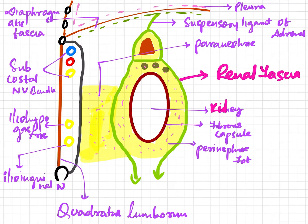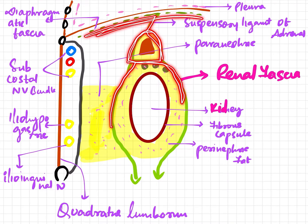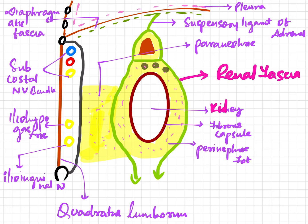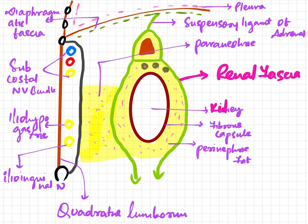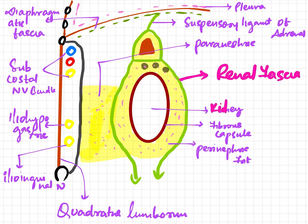This renal fascia extends in different directions — superiorly, inferiorly, medially, and laterally. Superiorly, it encloses the adrenal gland and fuses, forming what is called the suspensory ligament of the adrenal. Inferiorly, the anterior layer fuses or merges with the extraperitoneal connective tissue, whereas the posterior layer blends with the fascia iliaca.